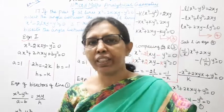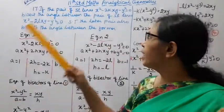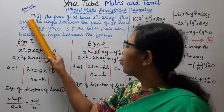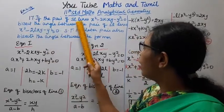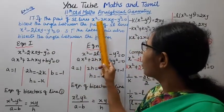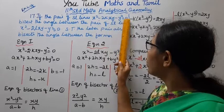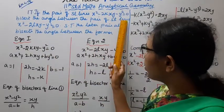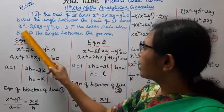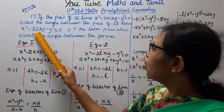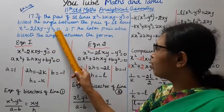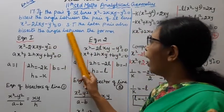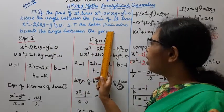Hello students, welcome to Max and Tamil channel. 11th standard Maths, analytical geometry, exercise 6.4, 17th sum. The pair of straight lines x² - 2kxy - y² = 0 bisects the angle between the pair of straight lines x² - 2lxy - y² = 0. Show that the latter pair also bisects the angle between the former.